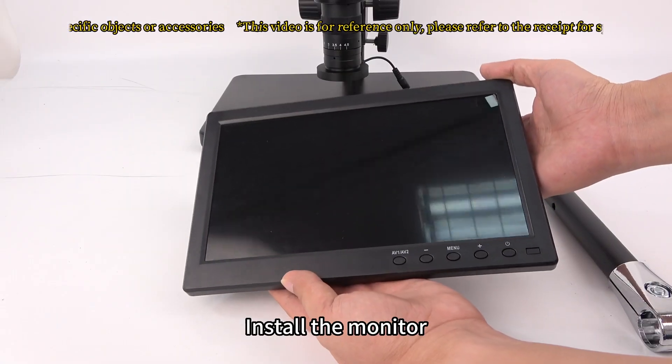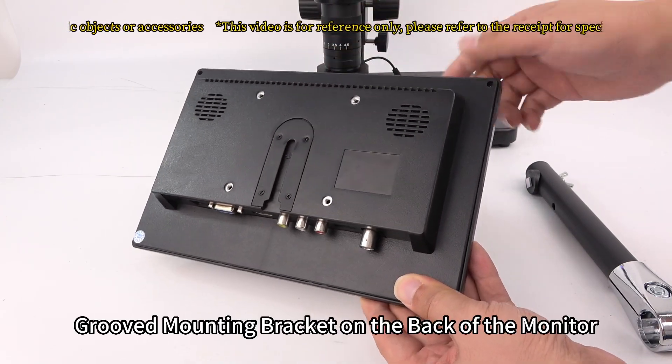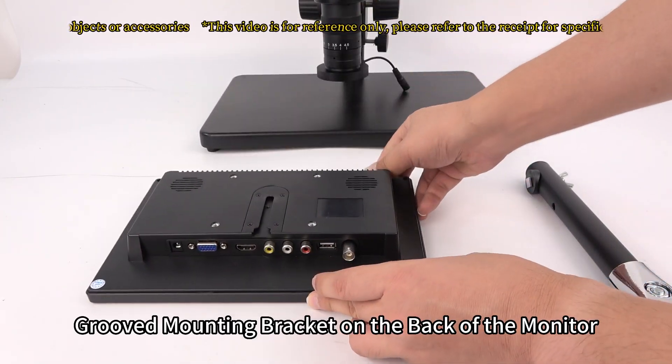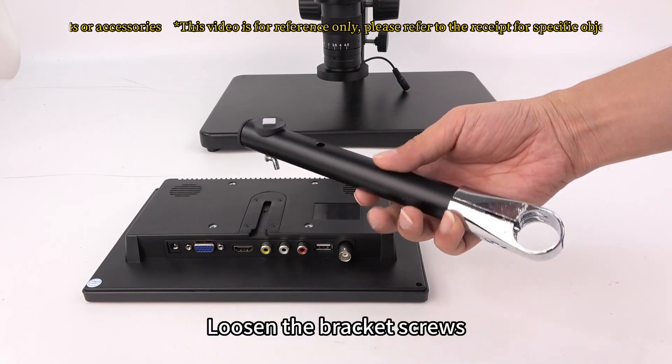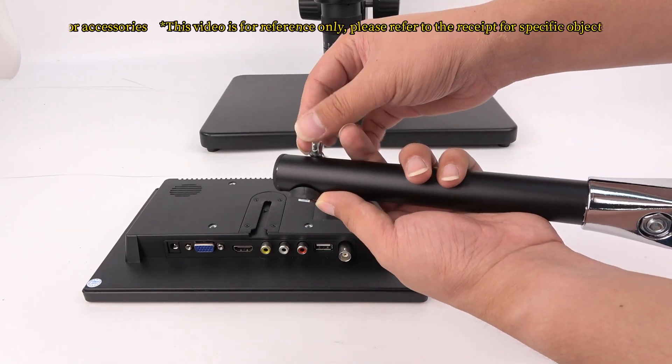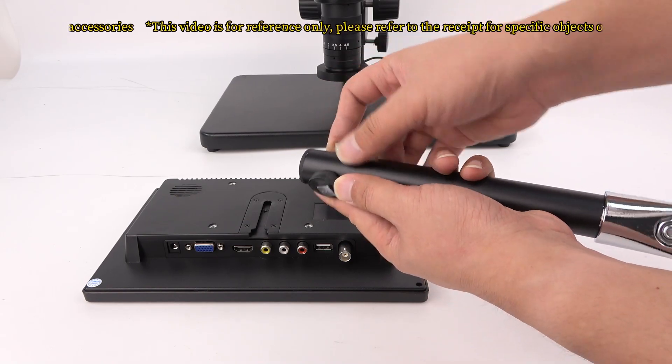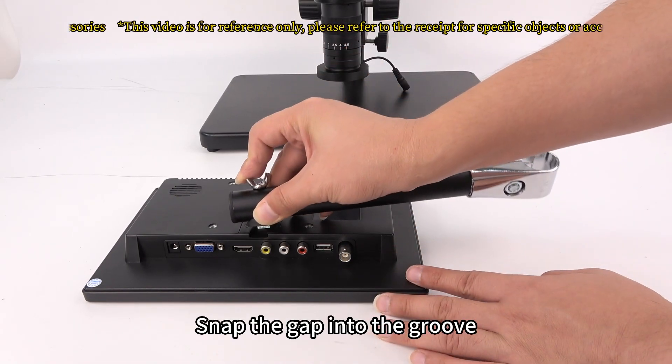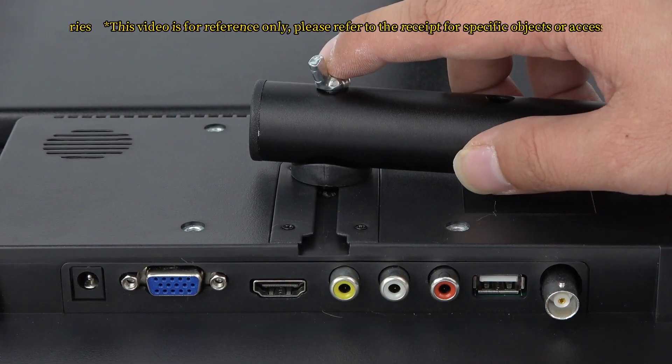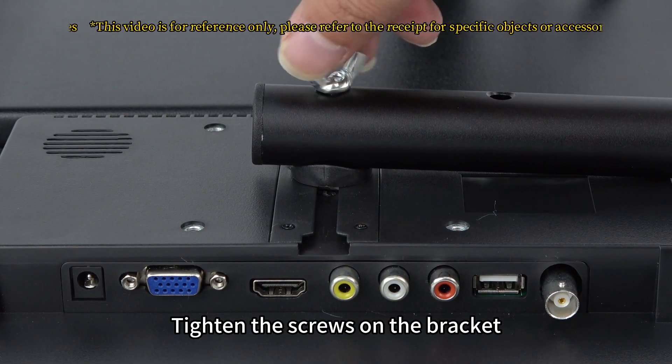Install the monitor. Grooved mounting bracket on the back of the monitor. Loosen the bracket screws. There will be certain gaps in the small square iron sheet. Snap the gap into the groove. Tighten the screws on the bracket.